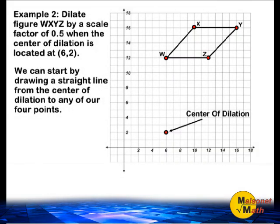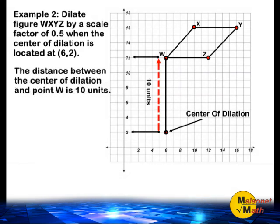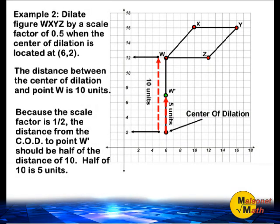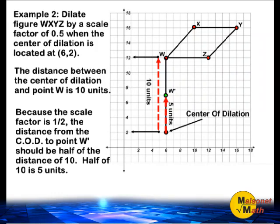I am going to start by drawing a straight line from the center of dilation to point W. We can see that the distance from our center of dilation to point W is 10 units. Because we must dilate our object by a scale factor of 1 half, the new distance from the center of dilation to the new point W should be half of that distance. Half of 10 units is 5 units, so we are going to make a new point 5 units directly above the center of dilation. That is going to be our dilated point W.